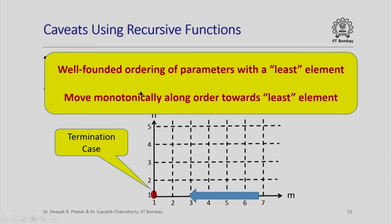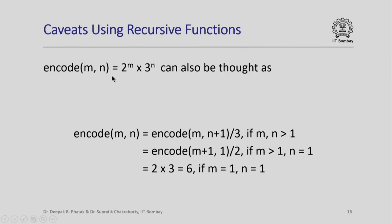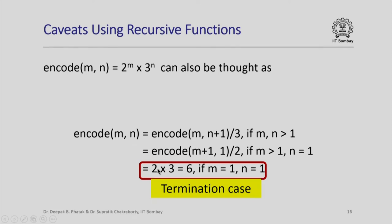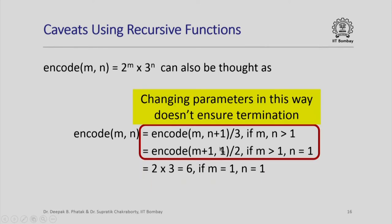For example, the same encode function 2^m × 3^n can also be specified recursively by increasing n and dividing by 3, or increasing m and dividing by 2, with the same termination case. However, these are bad recursive formulations: given a value of (m, n), n keeps increasing, or m keeps increasing, and we will never reach the termination case. This is a bad recursive design — using this recursive function will not terminate in general.